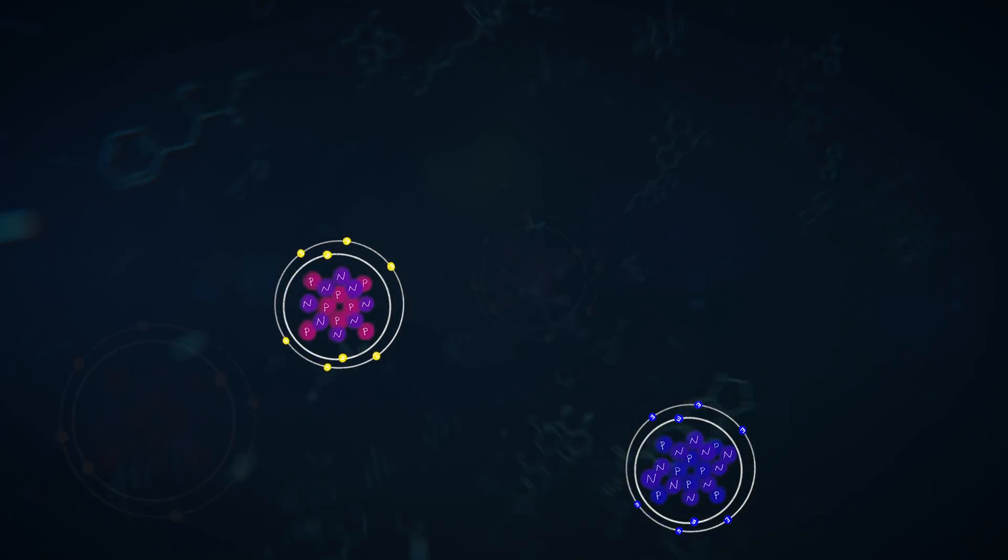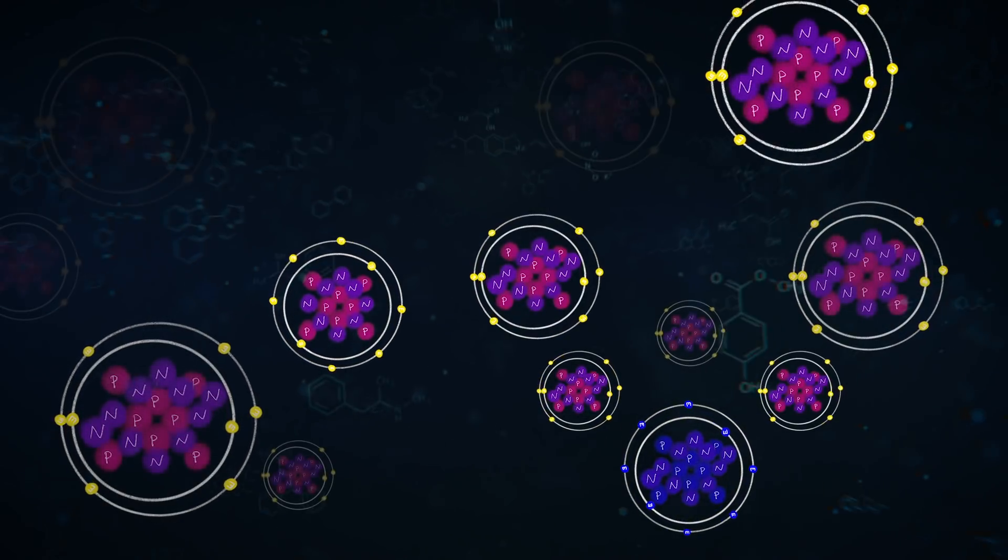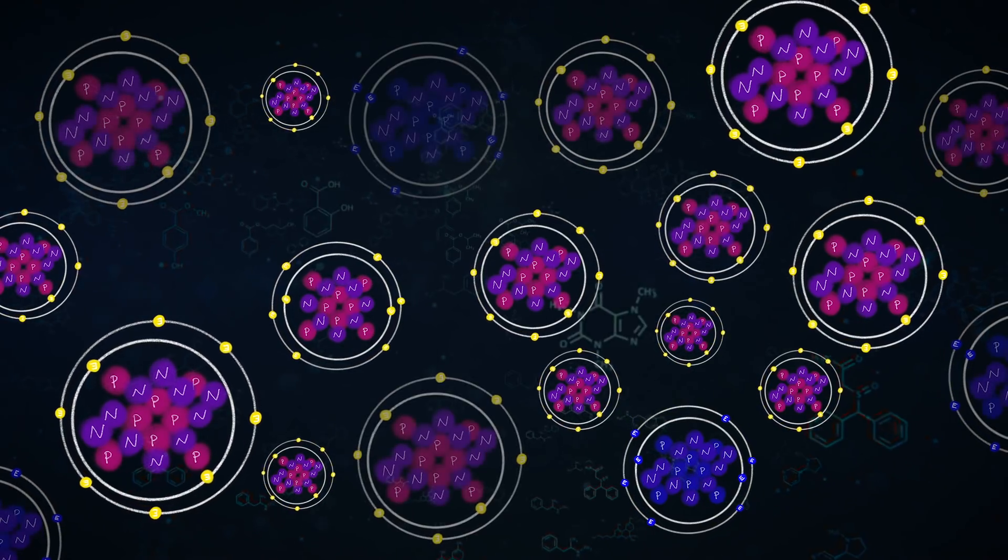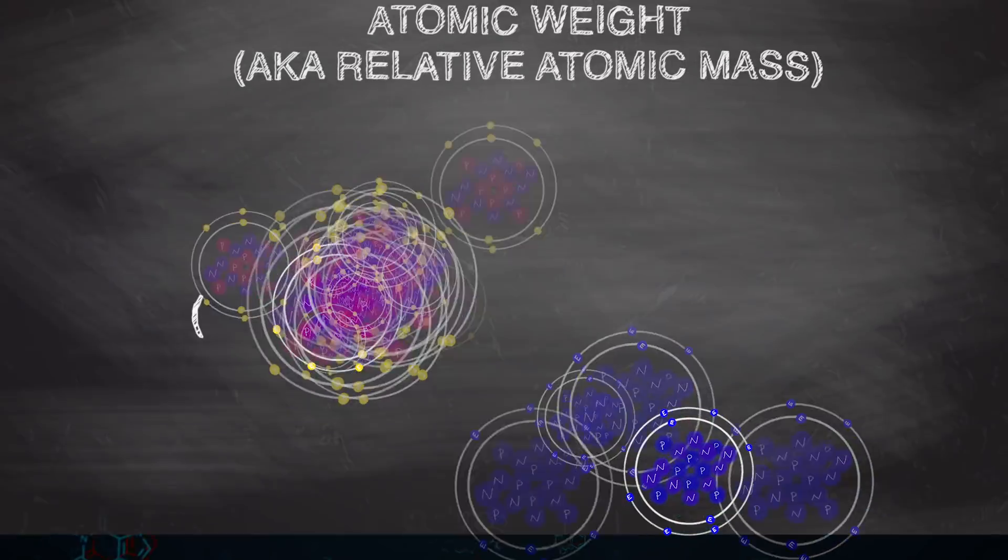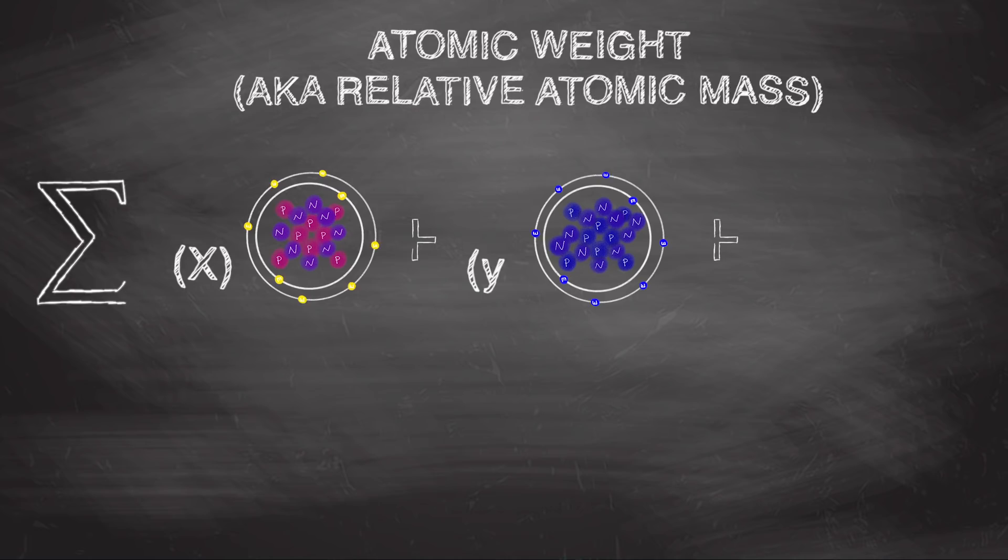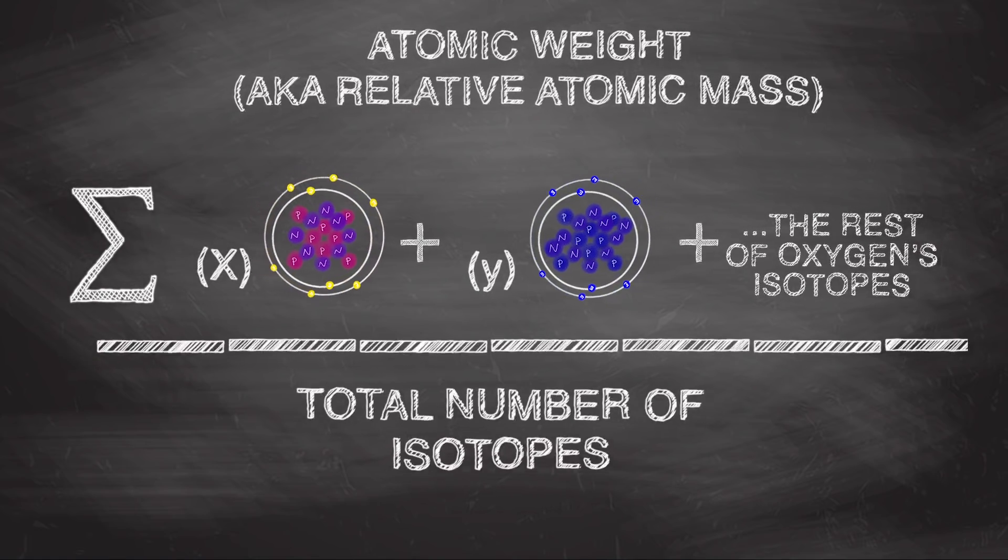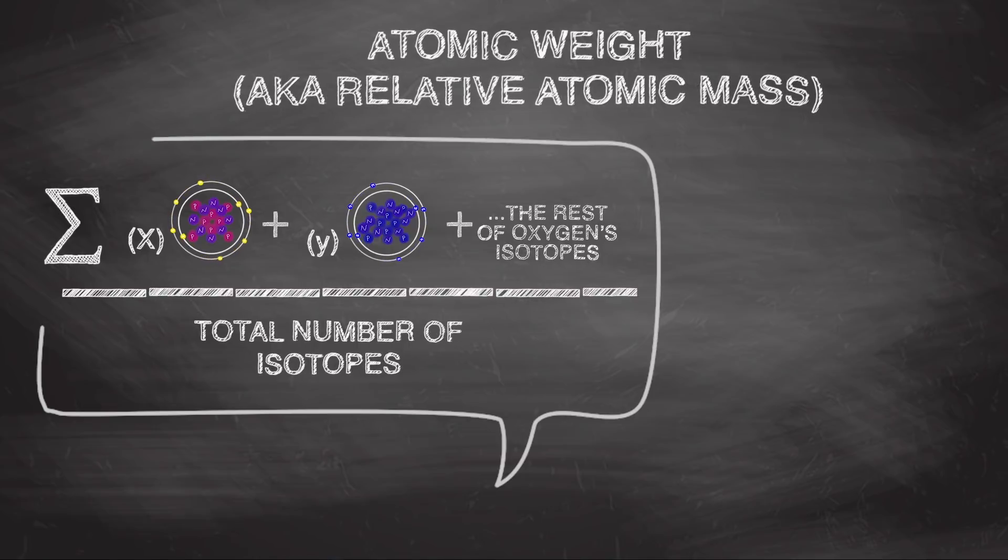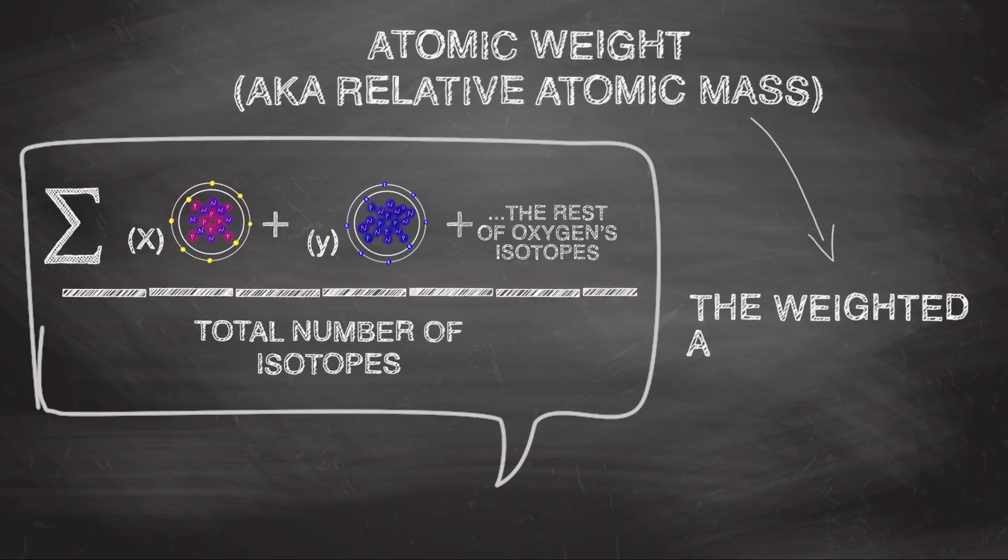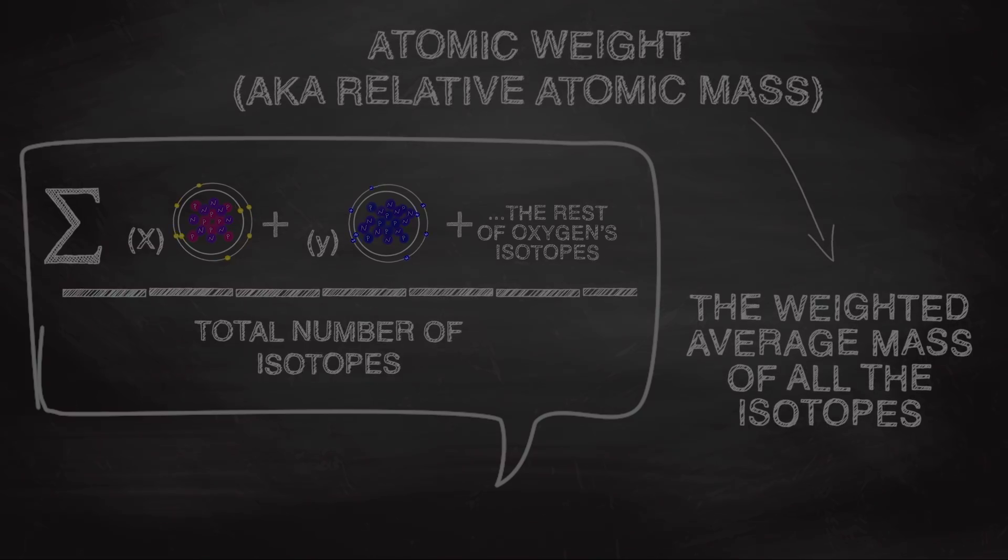And some isotopes are more common in nature than others, which means that each isotope is given a value according to how much of it exists, then they're all added together and divided by the total number of isotopes. That's what it means when we say that atomic weight is the weighted average mass of all of the different isotopes of that element.